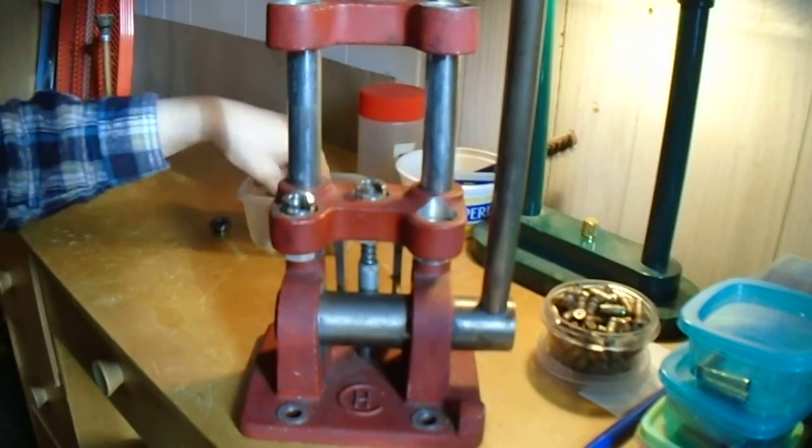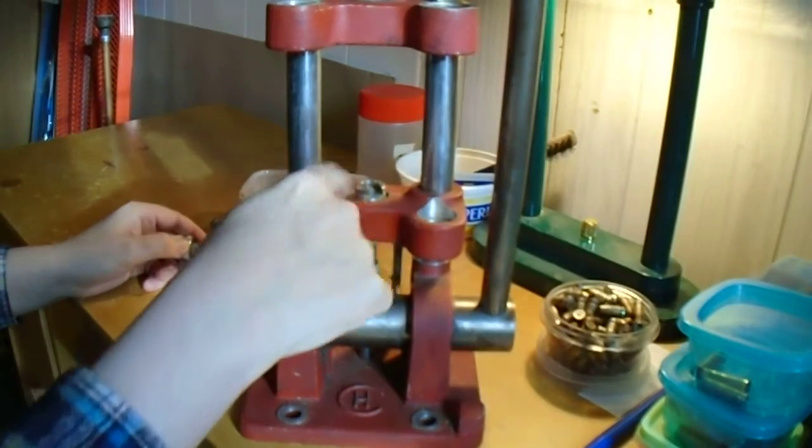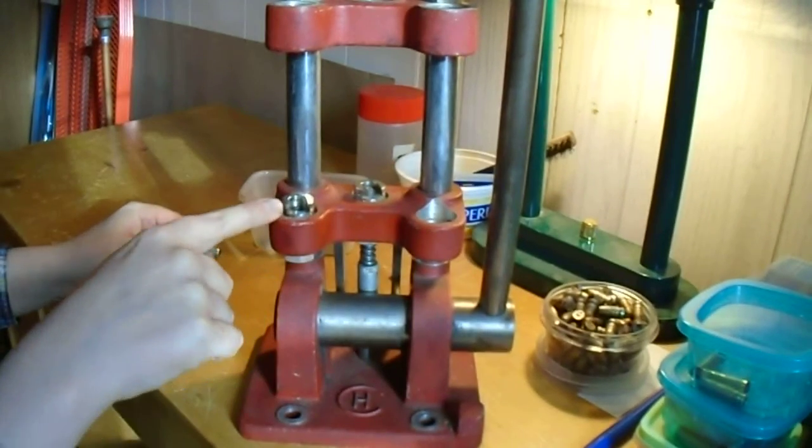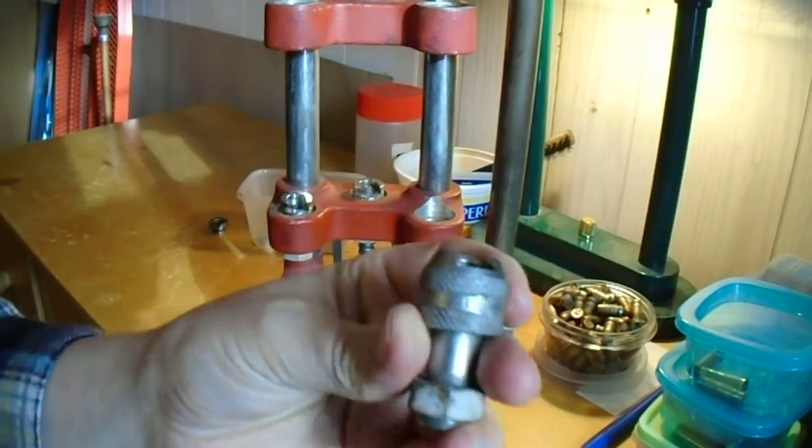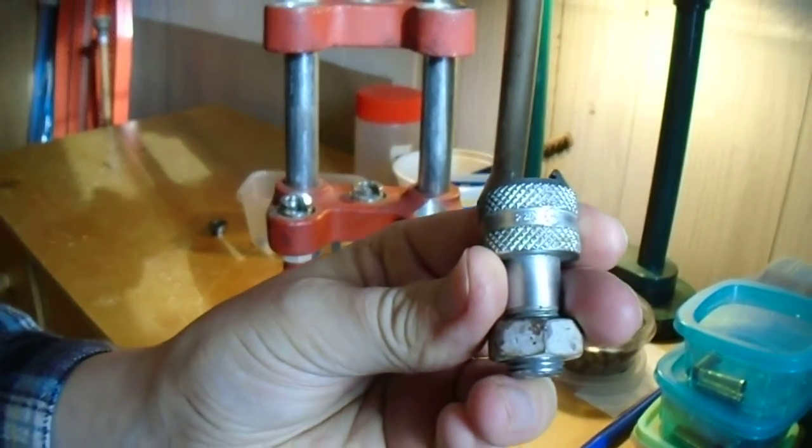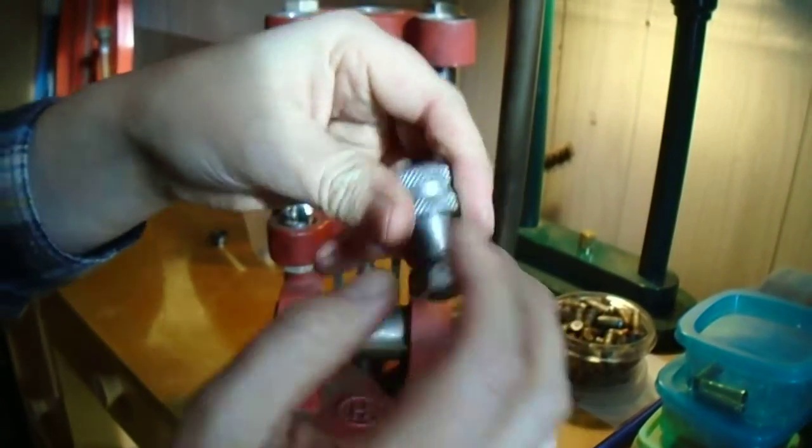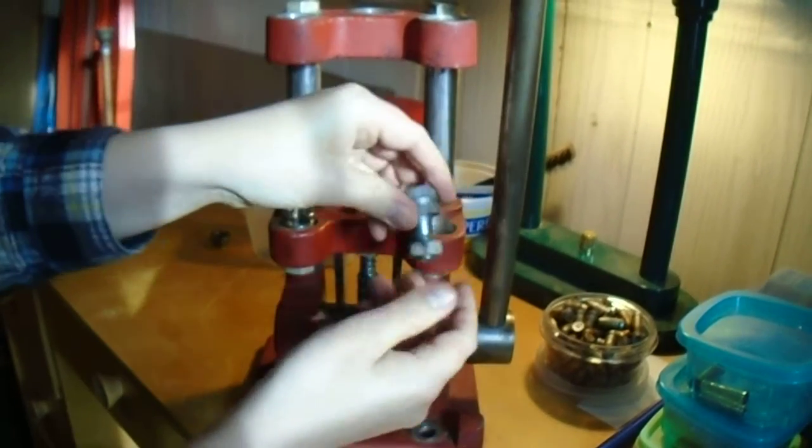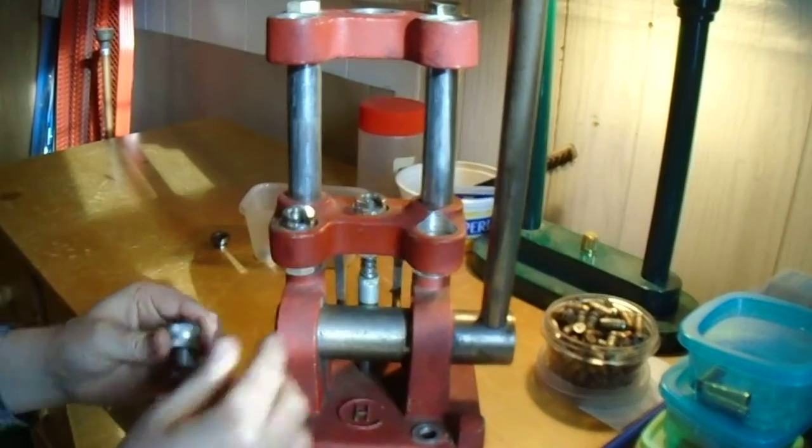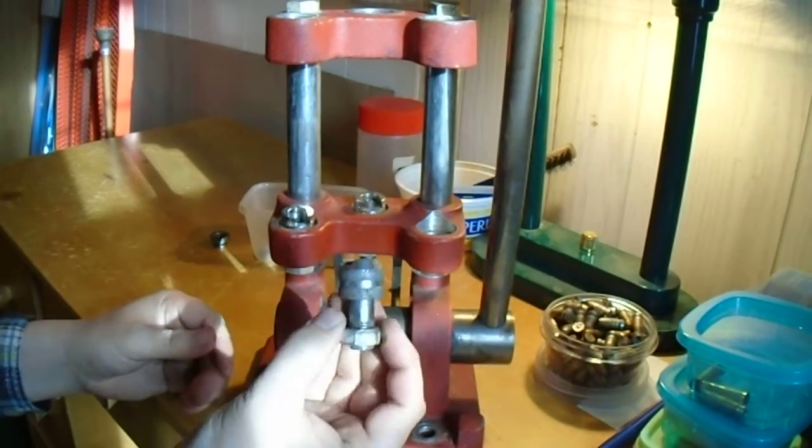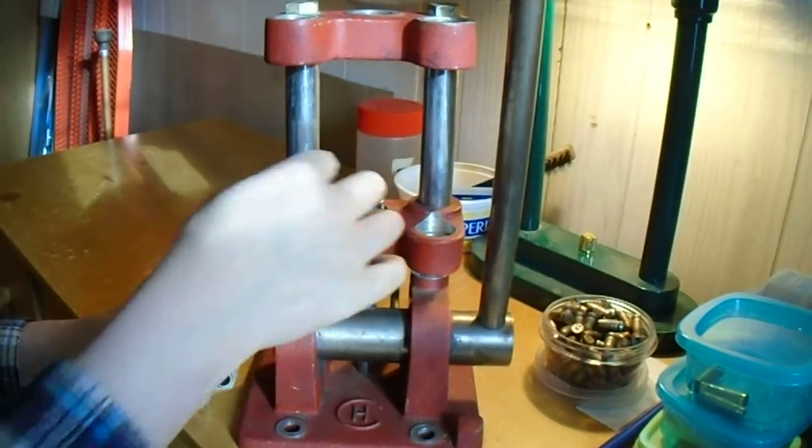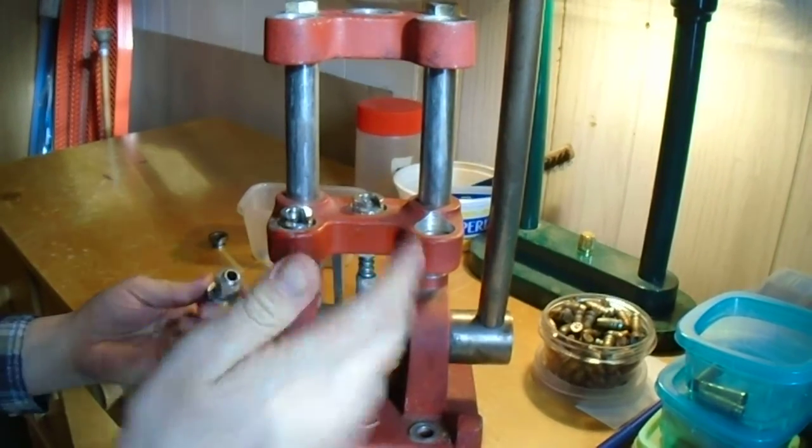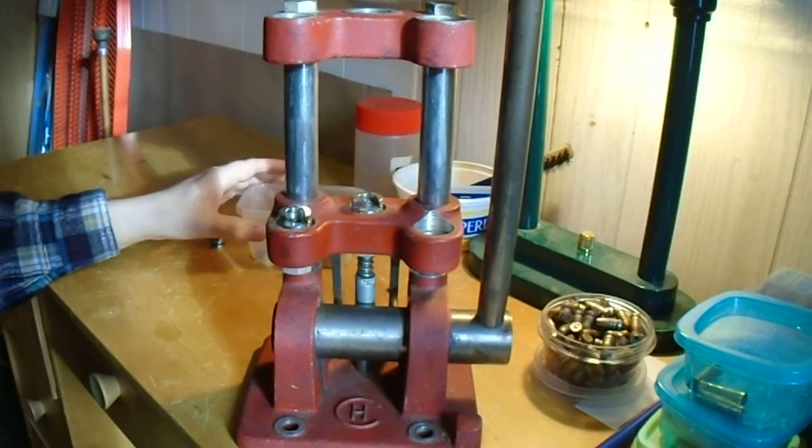And it has these kind of universal things that hold the shell holders. They're kind of like this one, but this one's actually designated for 222 Remington. There's a nut on the bottom you take off, and then you put it in the station and turn it, put the nut on. These ones here will hold normal shell holders. But I only have two of them, so that's kind of a problem.